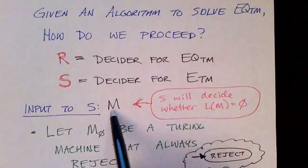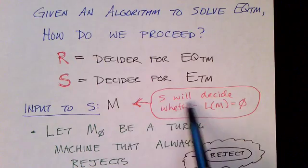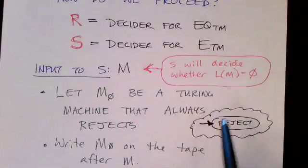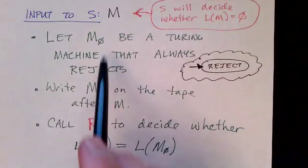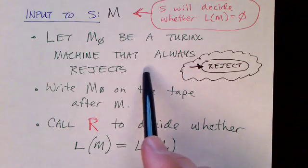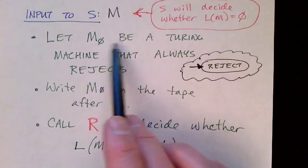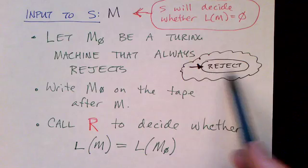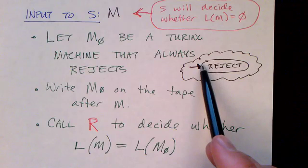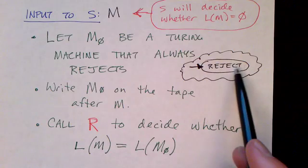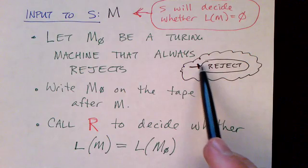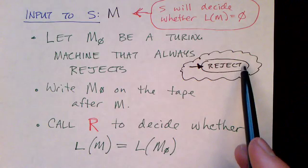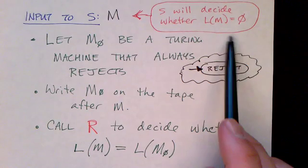To test whether a Turing machine accepts anything at all, algorithm S takes as input a description of a Turing machine and decides whether the language accepted by it is empty or not. Our approach: we create a Turing machine M0 that always rejects everything. M0 has one state — a reject state that is also the initial state — and an empty transition function. Whatever is on the tape is completely ignored and M0 rejects instantly. Its language is clearly the empty set.